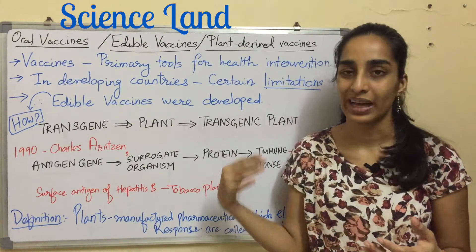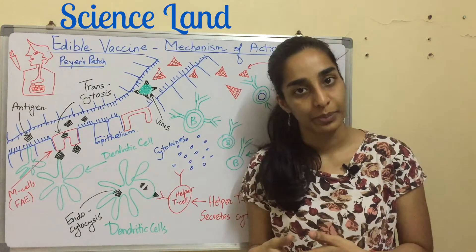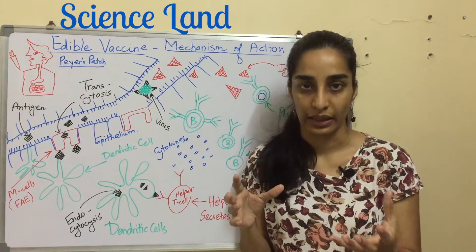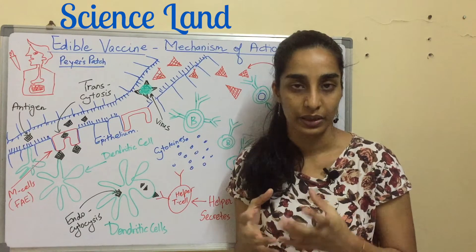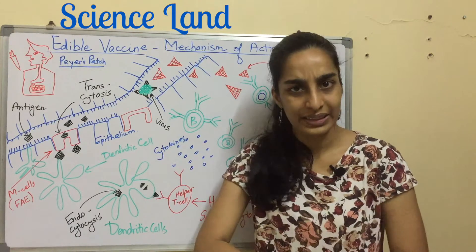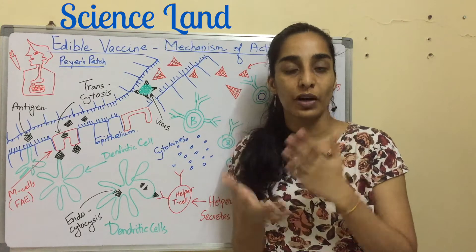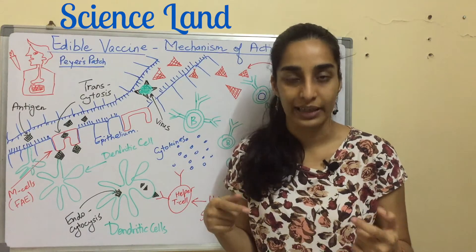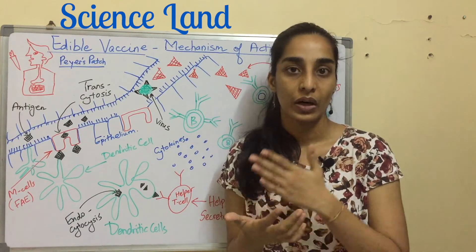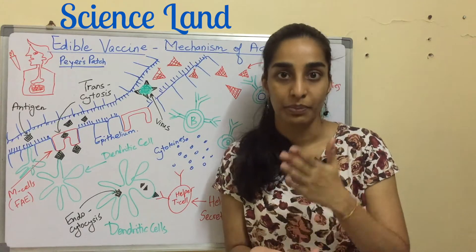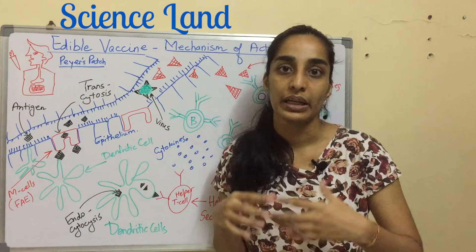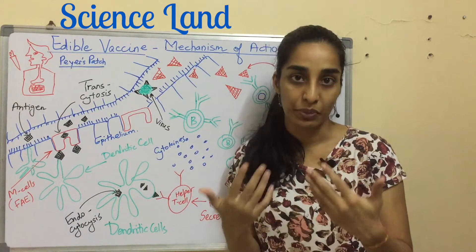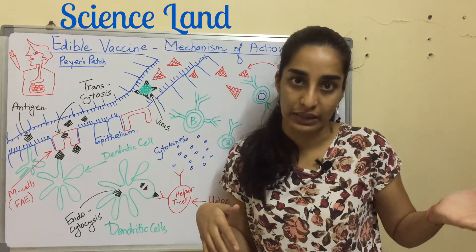By definition, plant-manufactured pharmaceuticals which elicit an immune response are known as edible vaccines. Now let's look at the mechanism of action — how an edible vaccine immunizes people. A pathogen invades a human body via different routes: openings like the nose, mouth, or skin if a wound is present. The first barrier is these openings, which have a mucosal lining — the nose, mouth, and urogenital tract all have mucosal lining. The body tries to stop the pathogen at this first barrier, which is where mucosal immunity comes into picture.